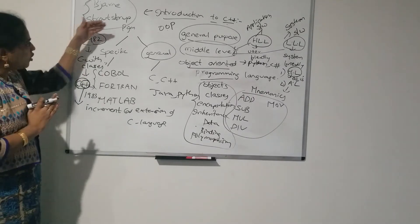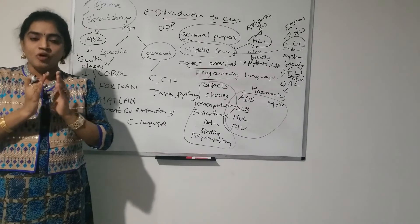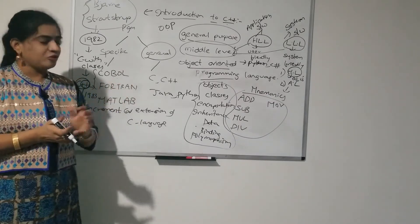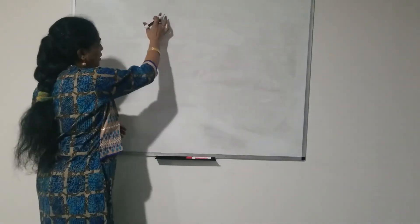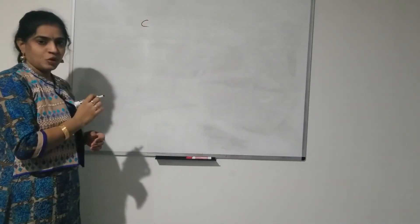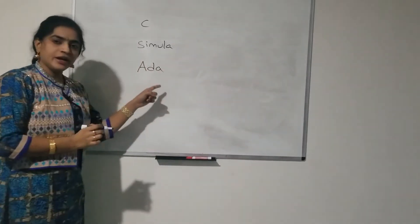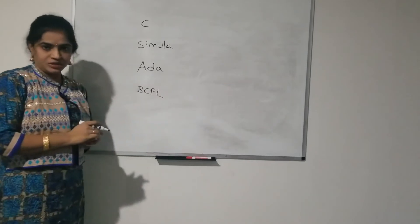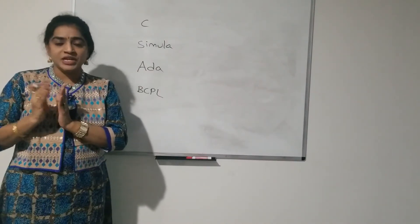While developing C++, Bjarne Stroustrup borrowed many features from many programming languages. The languages he borrowed from are: C, Simula, Ada, and BCPL (Basic Combined Programming Language). From these four languages he borrowed some features and named the new language as C++. From C language he borrowed most of the fundamental programming syntax.